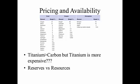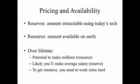That has to do with the idea of reserves and resources. Yes, I have these materials available, but two things dictate how much I can extract. Reserves are how much I can extract using today's technology. Resources are the total amount available on Earth. Titanium has 20 times more resources than carbon, but that doesn't mean we can extract all of it. Think of an analogy: you have the potential to make millions, but you'll likely make an average salary. Your resource is millions of dollars, but your reserve is probably a high five-figure or low six-figure salary. Getting the resource requires a lot more money and work.